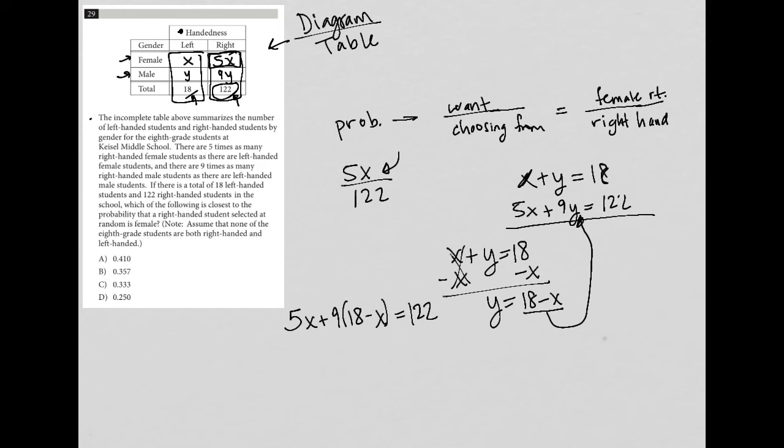So I'm going to solve this equation now. So I have 5X, 9 times 18, I can use my calculator, and I see that that is equal to 162. 9 times negative X becomes minus 9X equals 122.